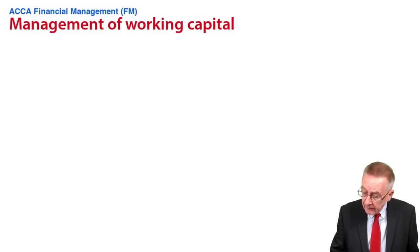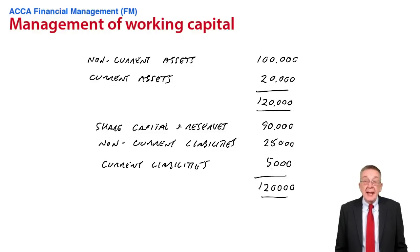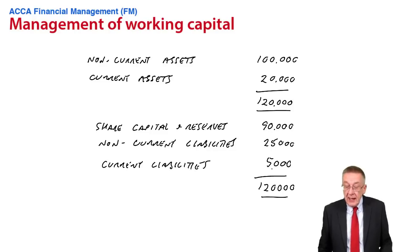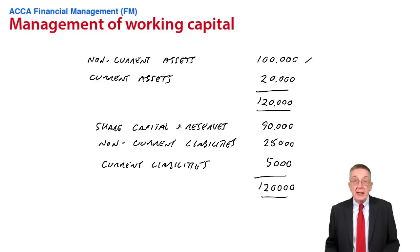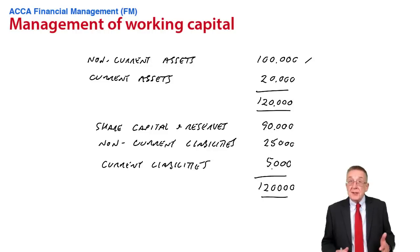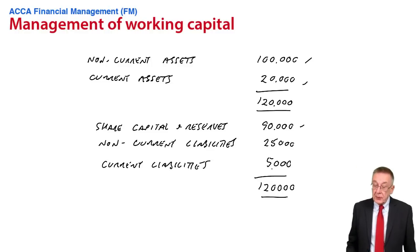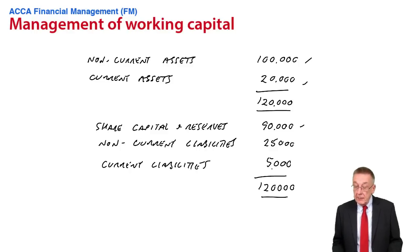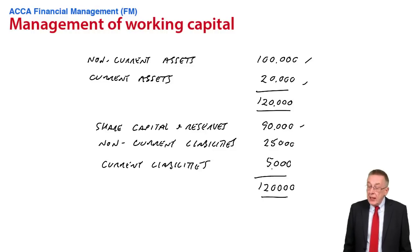I've written up there a very simple outline statement of financial position, and you should be familiar with the layout. This business has got a hundred thousand invested in non-current assets — the machines etc. Current assets of 20, share capital and reserves 90,000, non-current liabilities (long-term loans) 25, and current liabilities of 5.